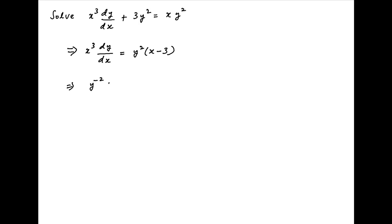Separating the variables we get y raised power minus 2 times dy is equal to x minus 3 upon x cubed times dx.